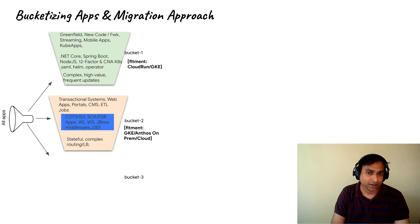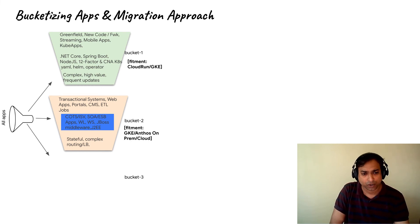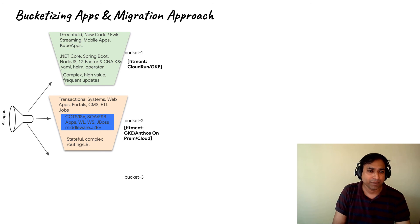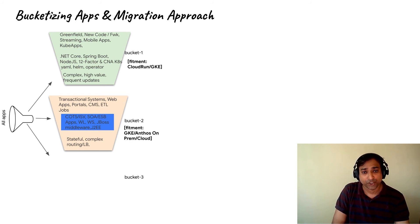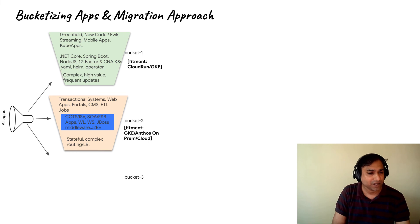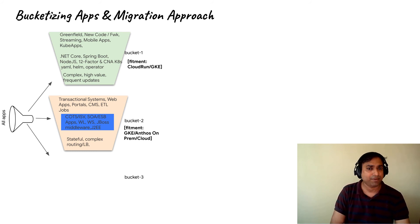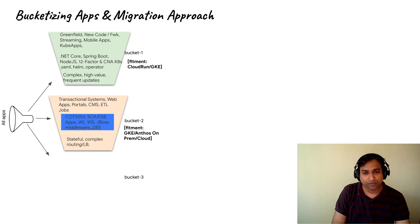The second bucket is those systems written 5 to 10 years back, when SOA and ESB were popular. These include transactional systems, web applications, portals, content management systems, web experience management systems, and ETL jobs. These are applications either written in a .NET framework or in a J2EE environment, typically deployed with SOA and ESB concepts using middlewares like WebLogic, WebSphere, Tomcat or JBoss. These applications are quite complex, and beyond serving B2C customers, a lot of these are deployed for internal IT applications in what we call custom in-house development. They also have stateful routing and load balancers in play. A good fitment for these can be GKE, both on-premise or on the cloud.